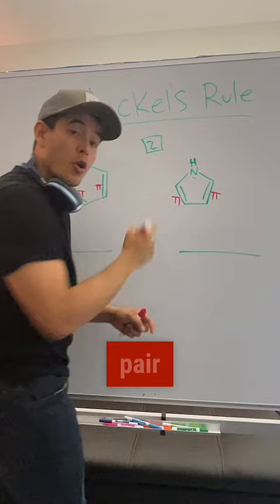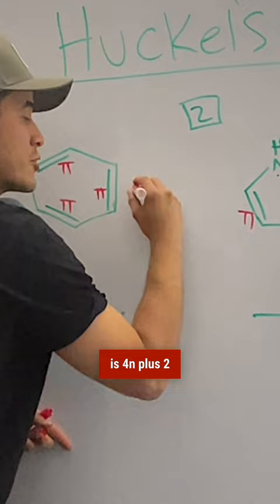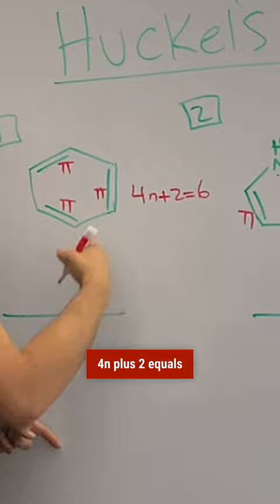In order to calculate Huckel's rule, our formula is 4n + 2 equals the number of pi electrons. So on the left hand side I'm going to get 4n + 2 = 6.